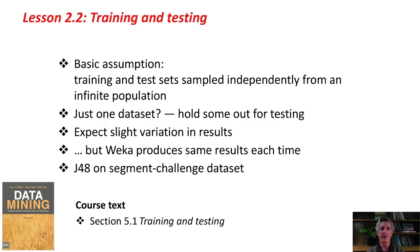The basic assumption of machine learning is that training and test sets are independently sampled from the same population. If you have just one dataset, hold part of it out for testing — maybe 33% or 10%. We would expect slight variation in results each time if we hold out a different set, but Weka produces the same results each time by reinitializing the random number generator. Please go and do the activity associated with this lesson. Bye for now.